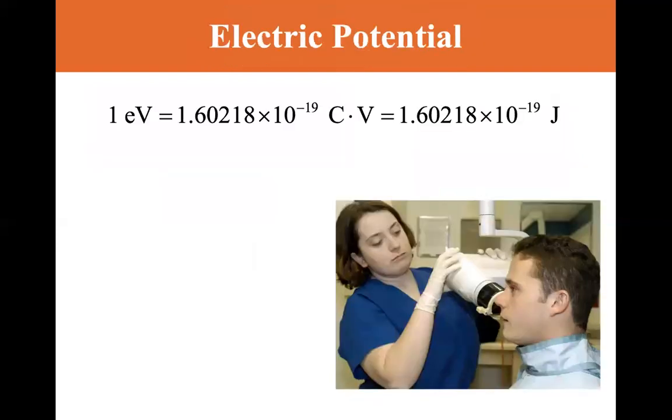Now we have a unit of energy called the electron volt. One electron volt is the electron, the charge on electron is 1.60218 times 10 to the minus 19 coulombs times one volt, it gives you 1.60218 times 10 to the minus 19 joules. So the electron volt is a unit of energy. It's not potential. It's a unit of energy.